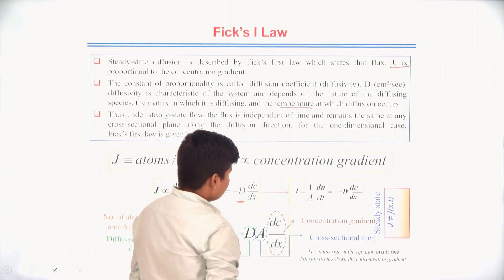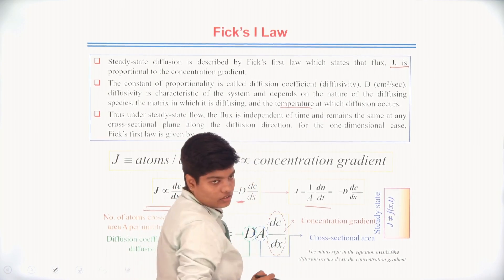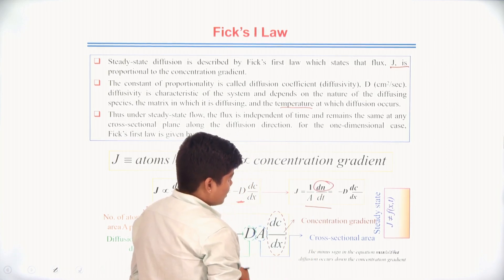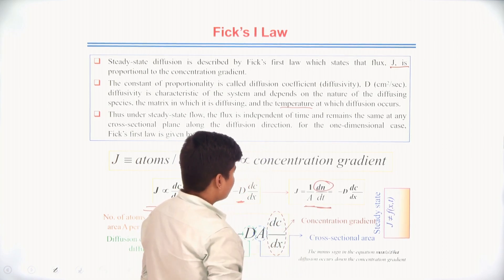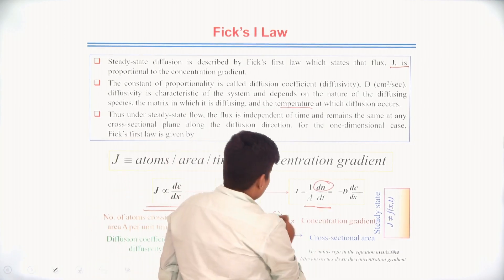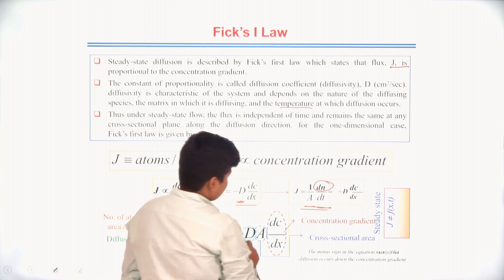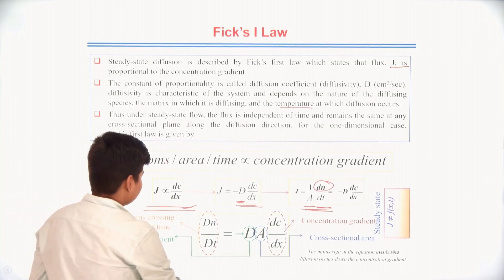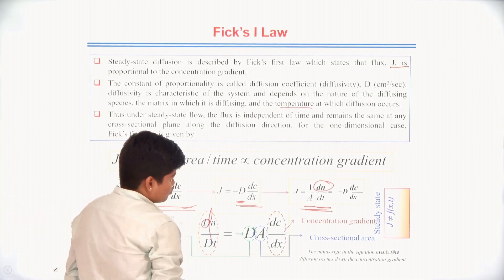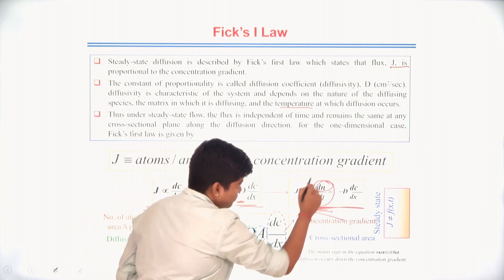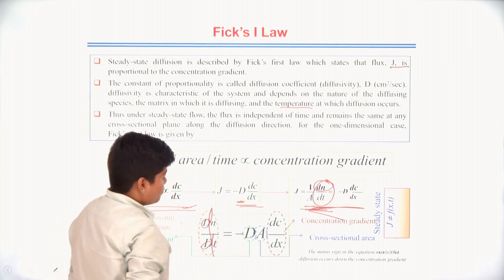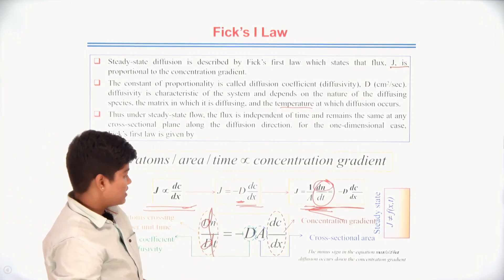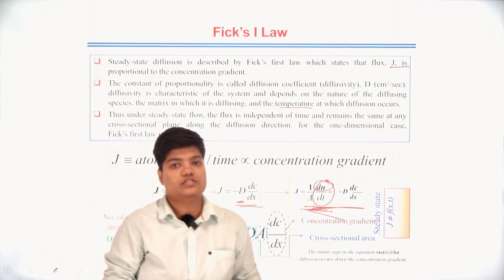We also know that J = (1/A)(dN/dt), the number of atoms per unit area per unit time. Equating the two formulas: (1/A)(dN/dt) = -D(dC/dX). From this we can calculate dN/dt = -DA(dC/dX), where D is the coefficient of diffusion, A is the cross-sectional area, and dC/dX is the concentration gradient.